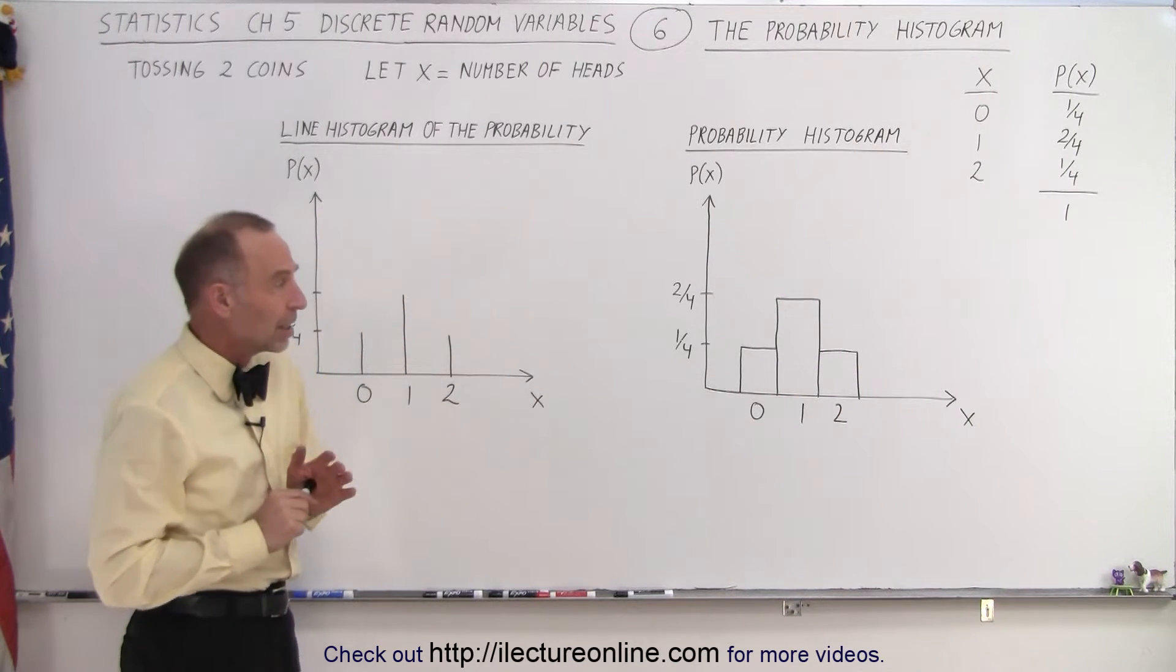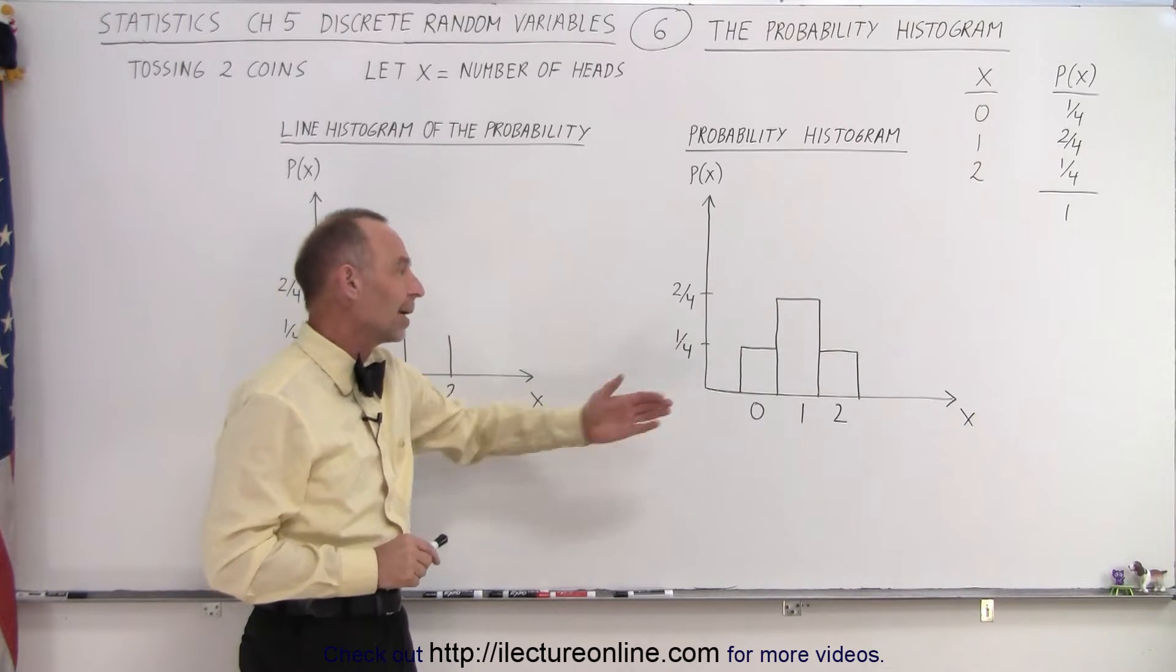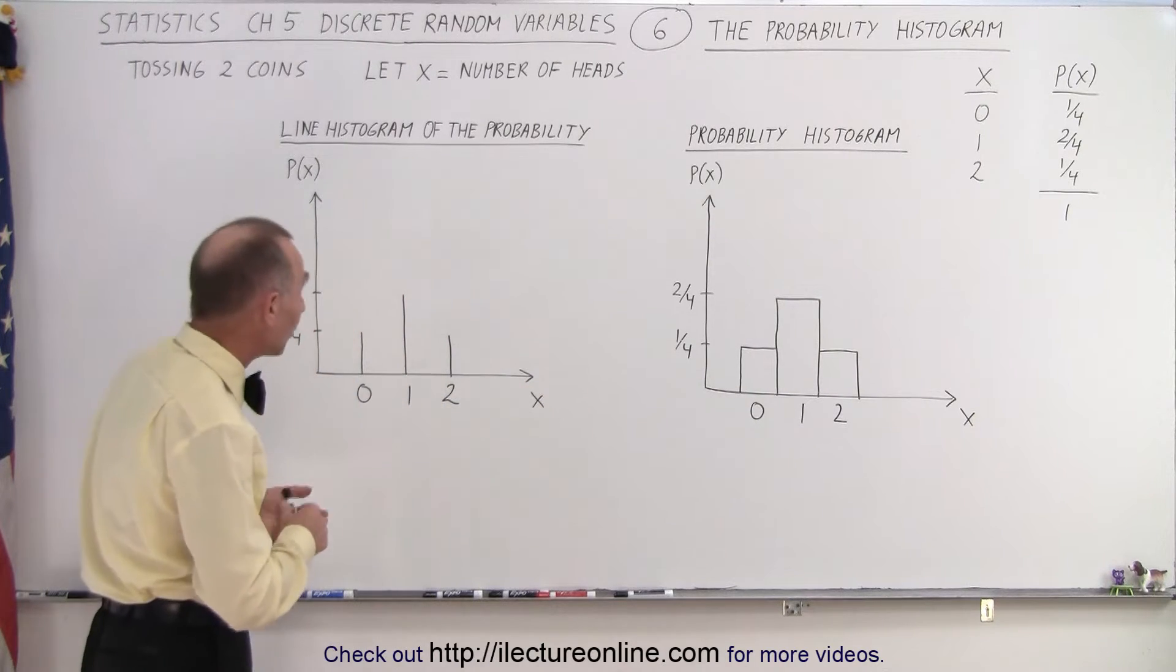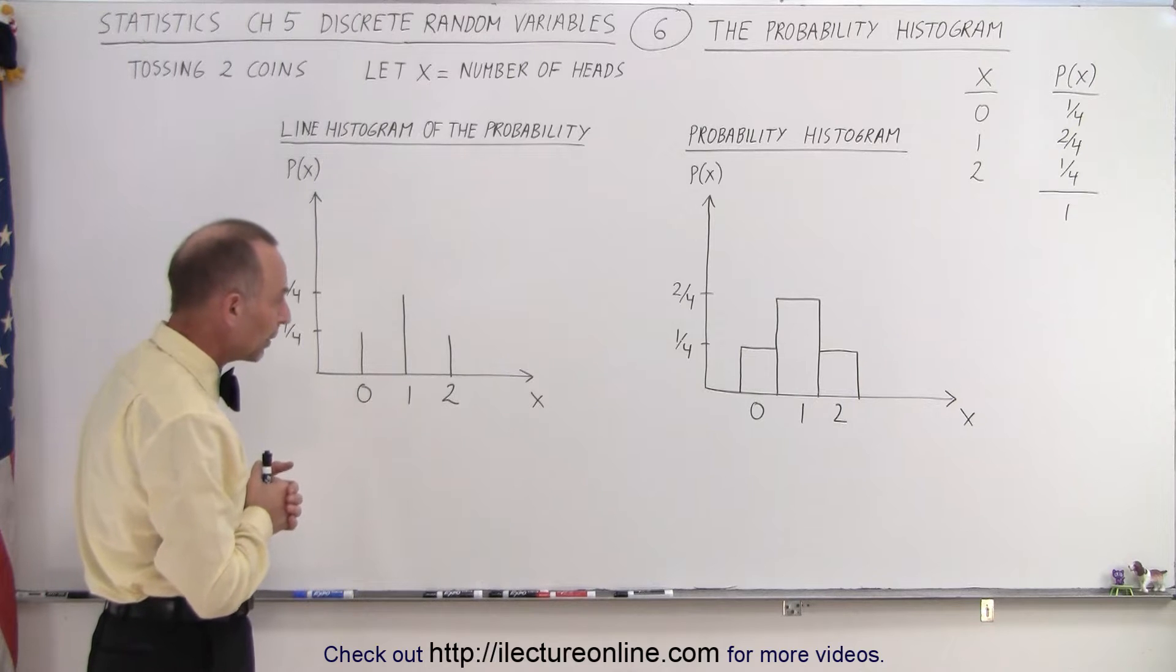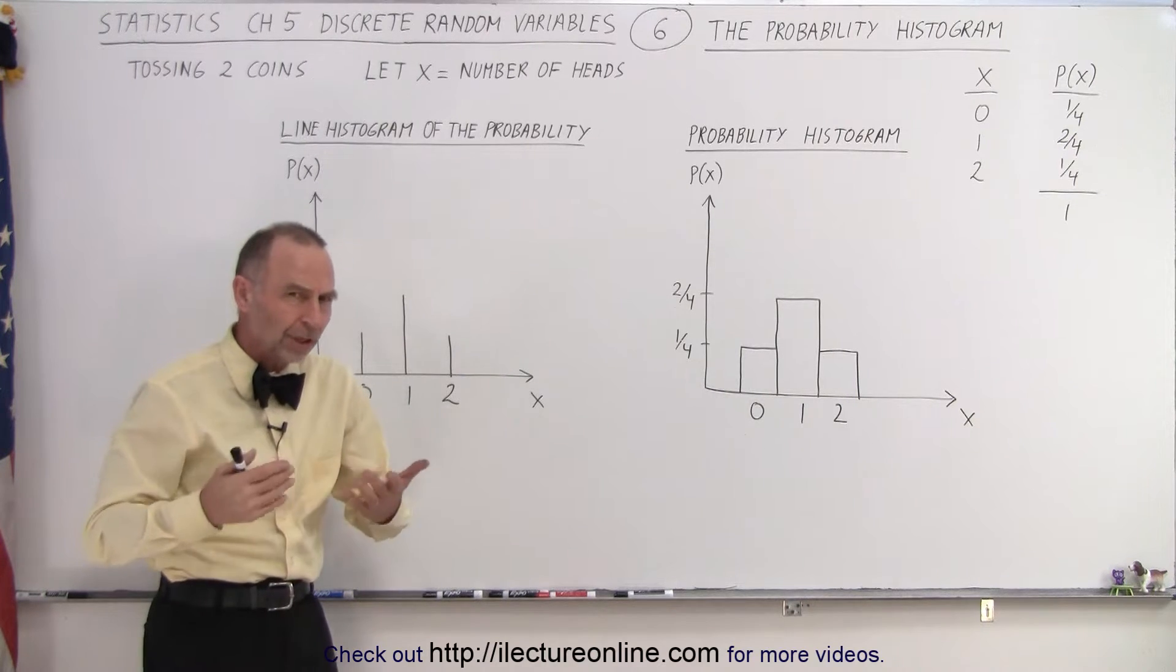Now there are two different kinds. Here's the most common type of histogram, but we can also have what we call a line histogram of the probability. So what does that look like and what is it?